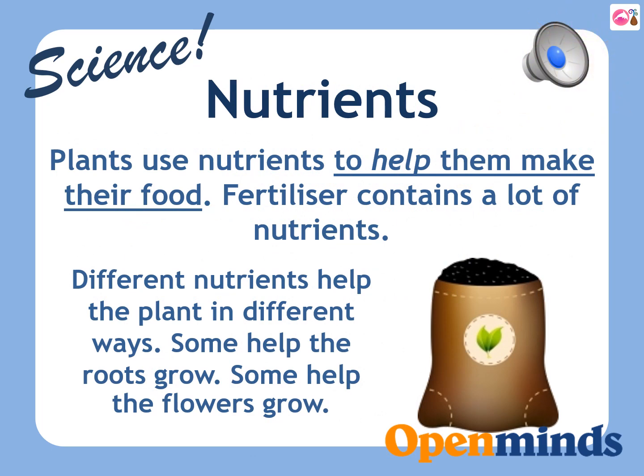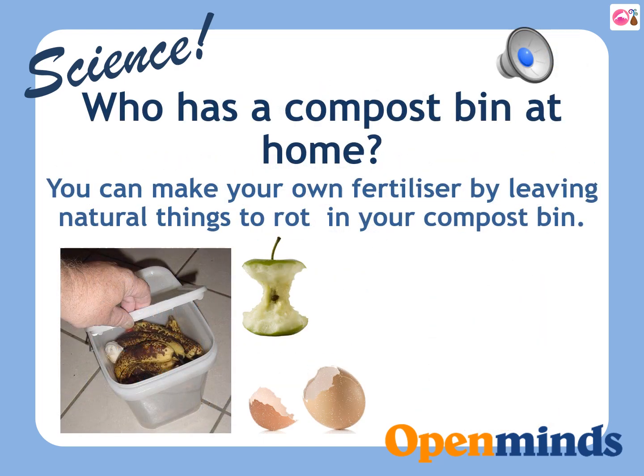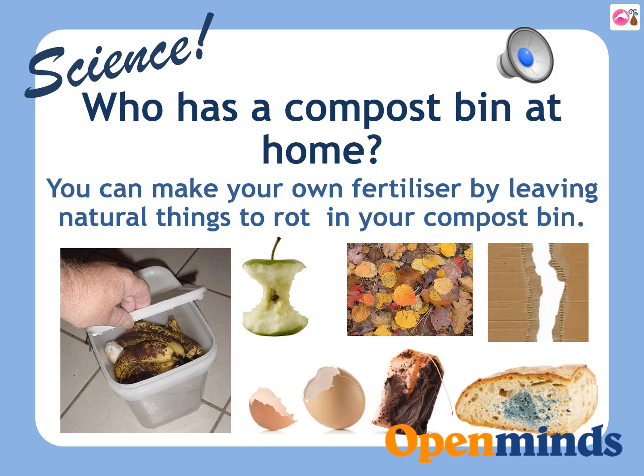Nutrients: plants use nutrients to help them make their food. Fertilizer contains a lot of nutrients. Different nutrients help the plant in different ways — some help the roots grow, some help the flowers grow. Who has a compost bin at home? You can make your own fertilizer by leaving natural things to rot in your compost bin.